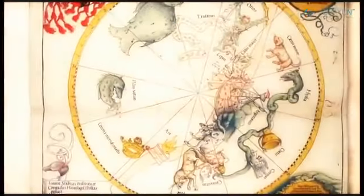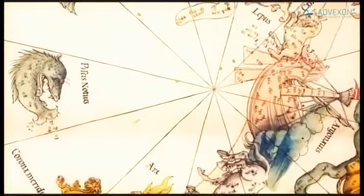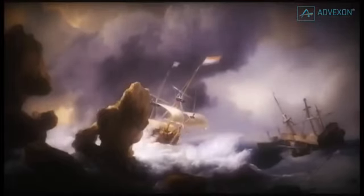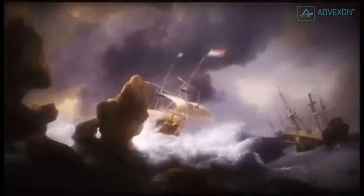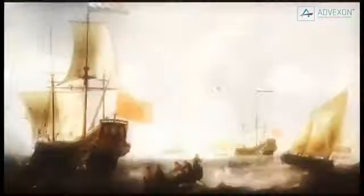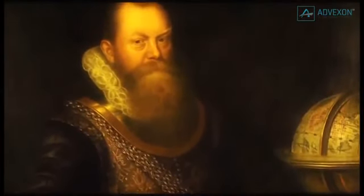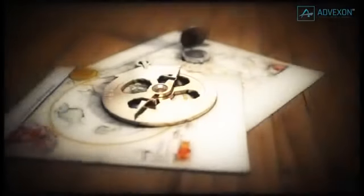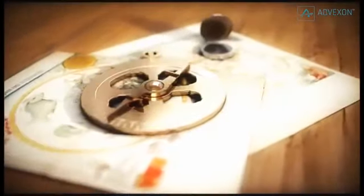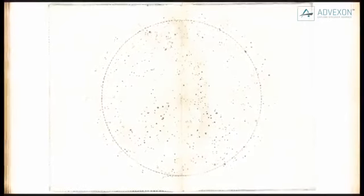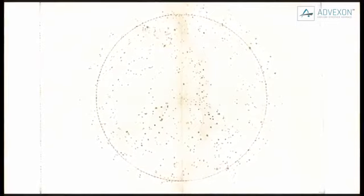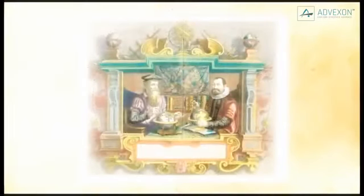For many centuries, maps of the southern sky showed extensive blank areas, the terra incognita of the heavens. In 1595, for the first time, Dutch traders set sail to the East Indies. At night, navigators measured the positions of more than 130 stars in the southern sky. Soon, celestial globes and maps showed 12 new constellations, none of which had ever been seen before by any European.